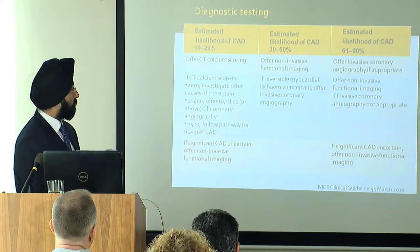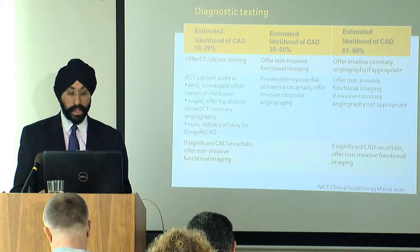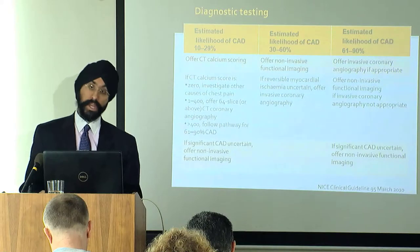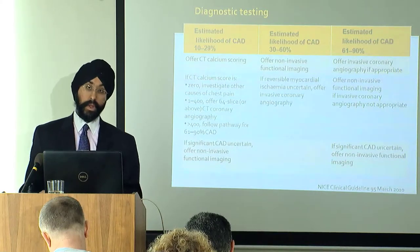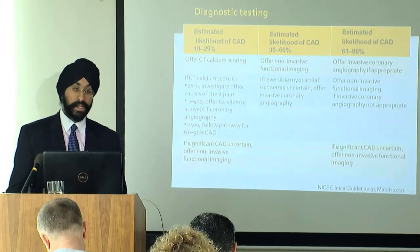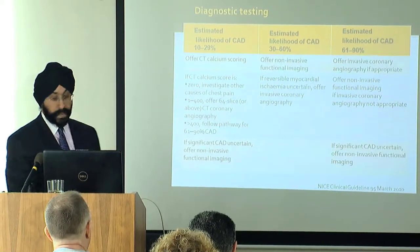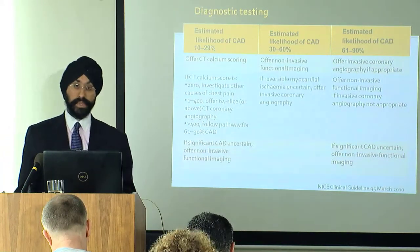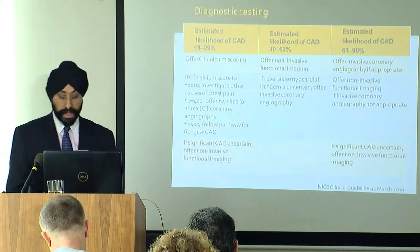In the middle group, the recommendation is to do a non-invasive functional imaging test. The most common practice in this country would be a stress echo, though an alternative may be a thallium scan, MIBI scan, or other test — it depends on local expertise as to what patients will be offered in this intermediate to high risk group. In the higher pretest probability group, the recommendation is to proceed straight to coronary angiography.